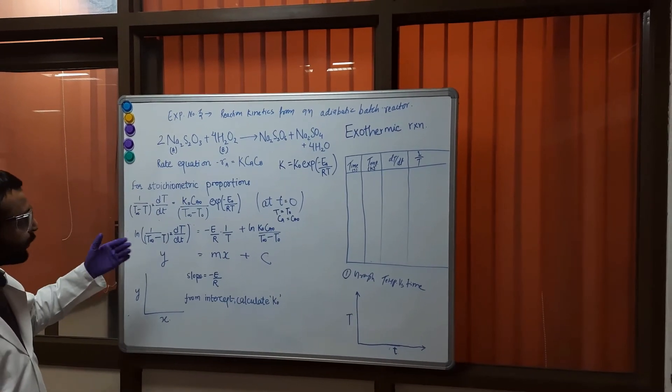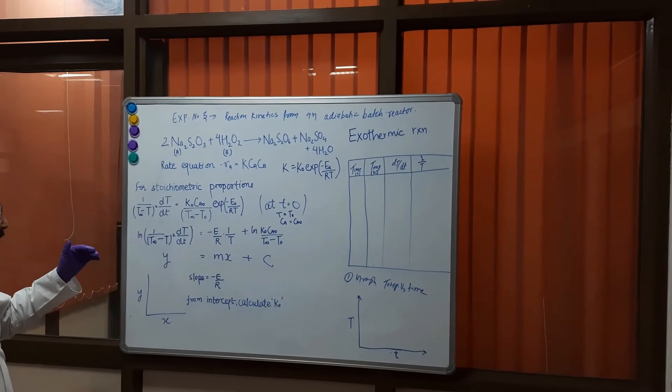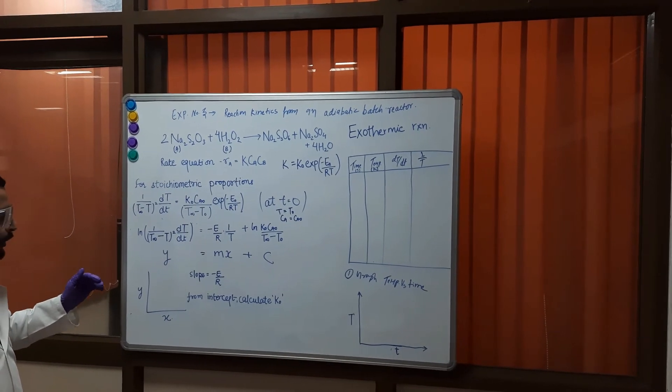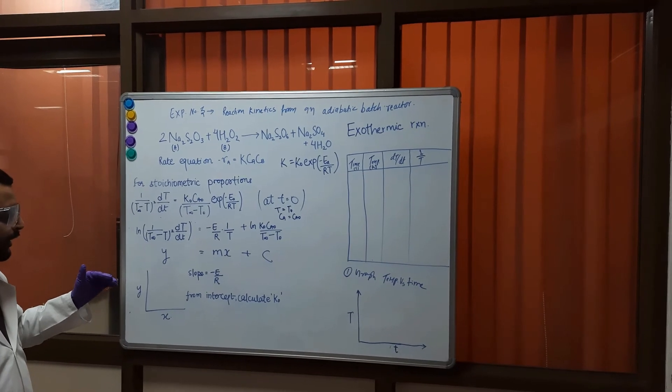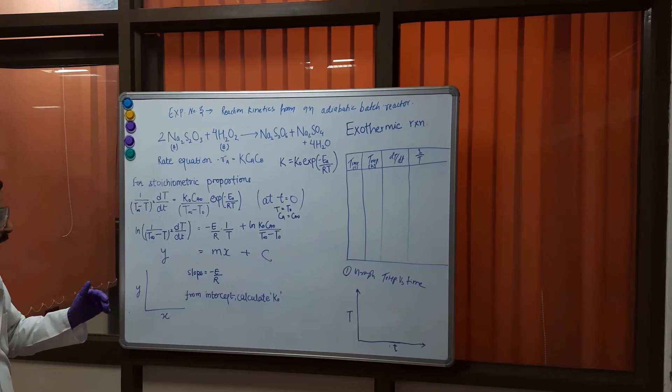Similarly for the non-stoichiometric proportion of reactants we will get another equation of this type and then we will apply log and plot y with respect to x. We will also get the activation energy and the frequency factor k0 from the slope and intercept respectively.